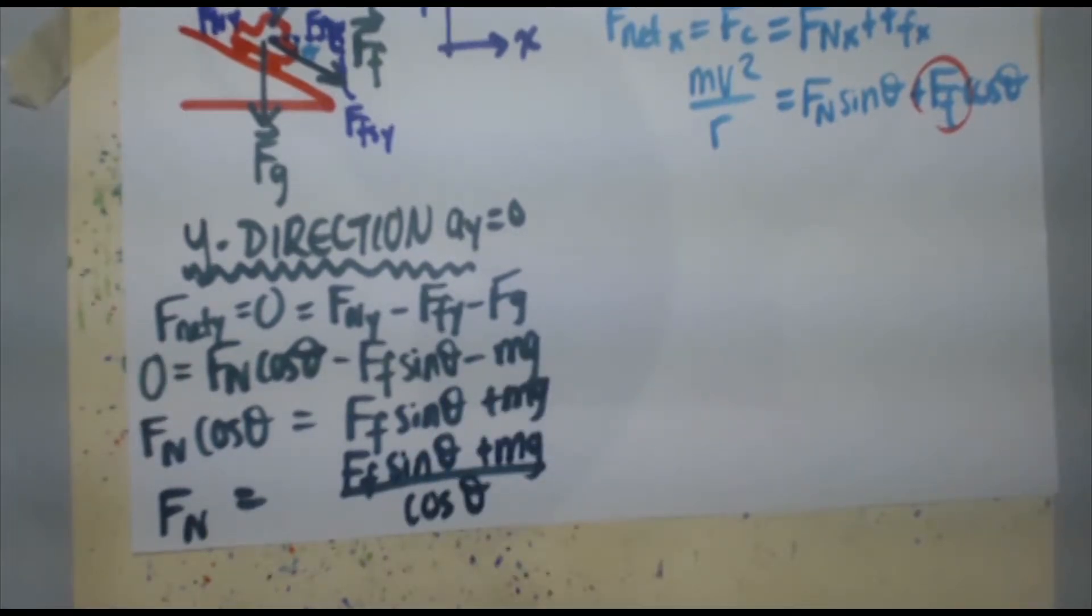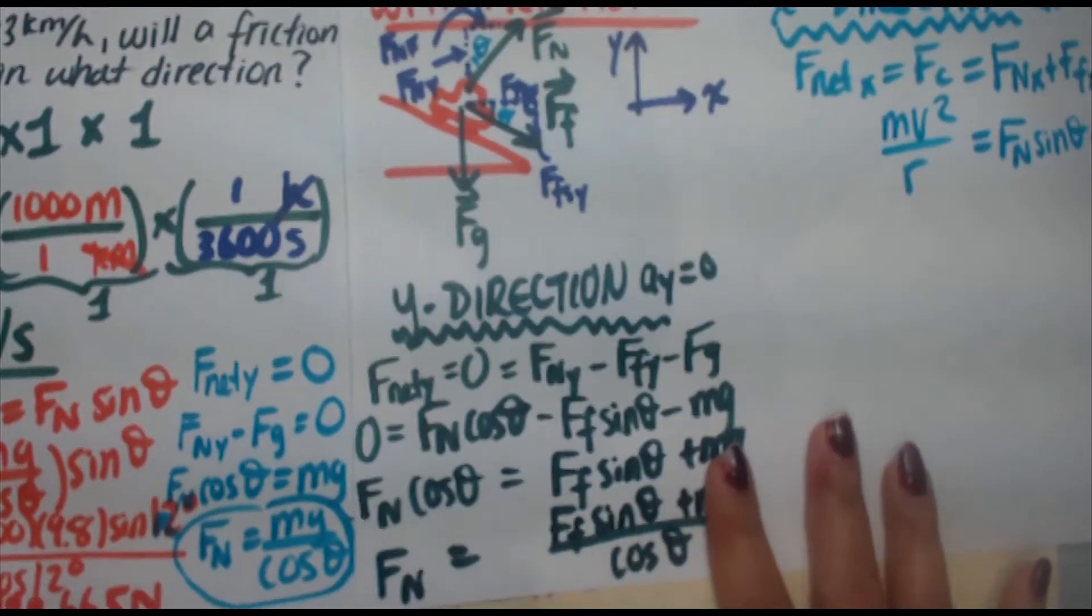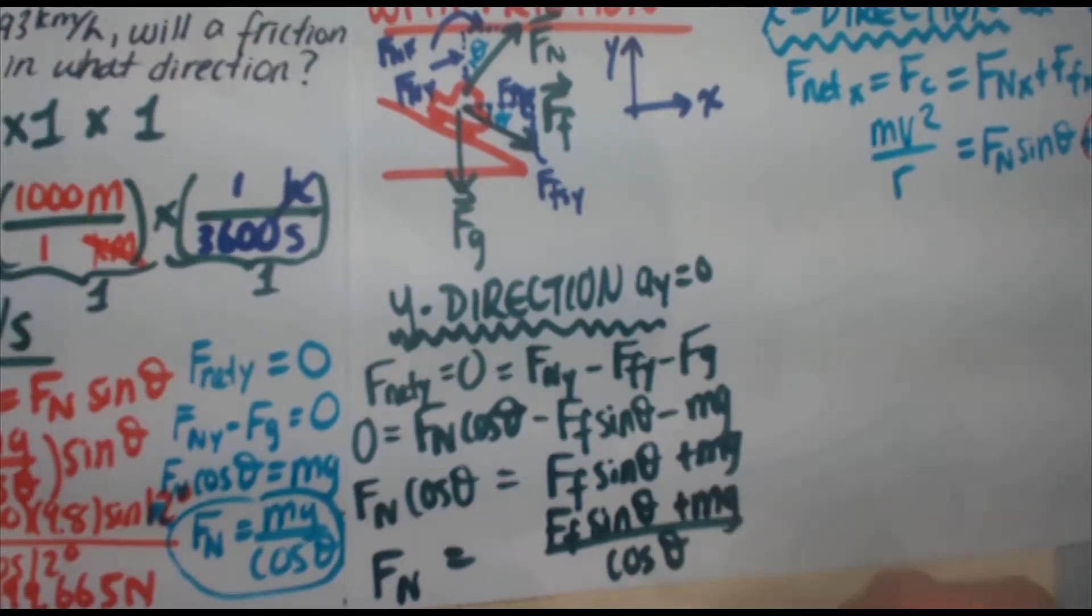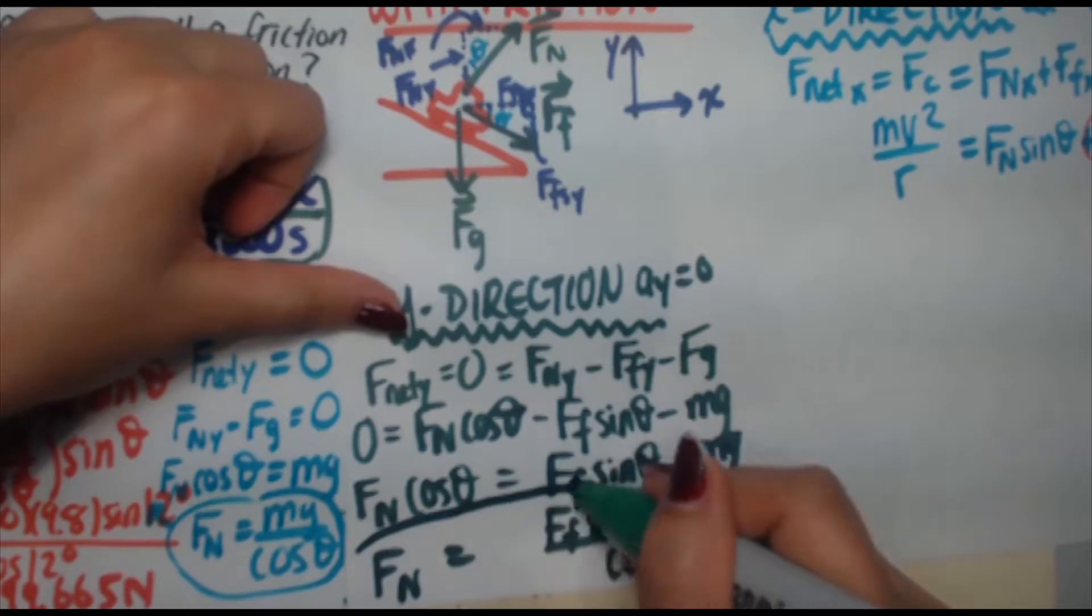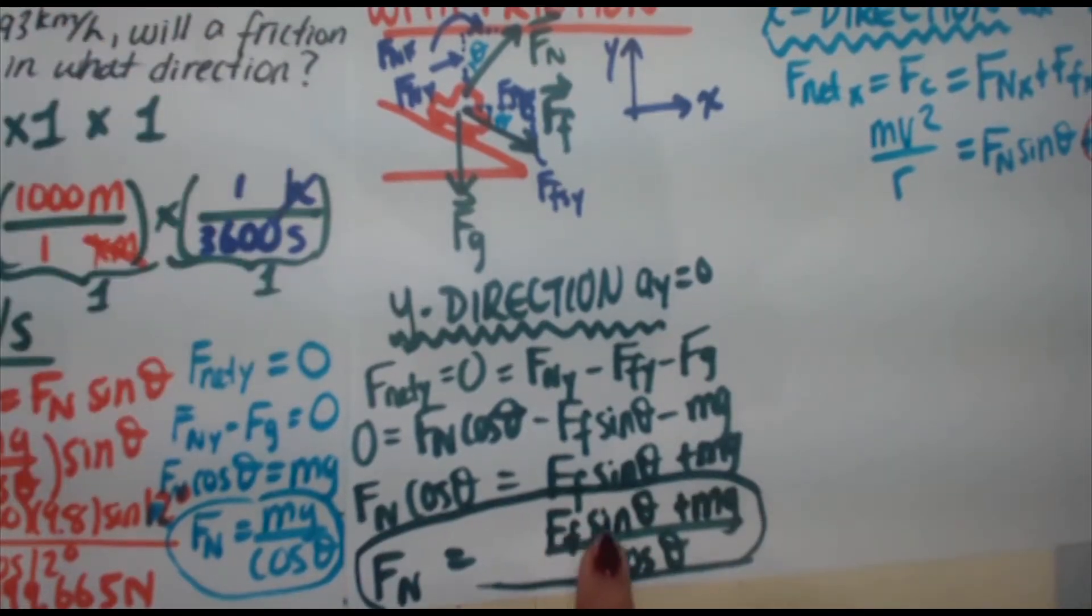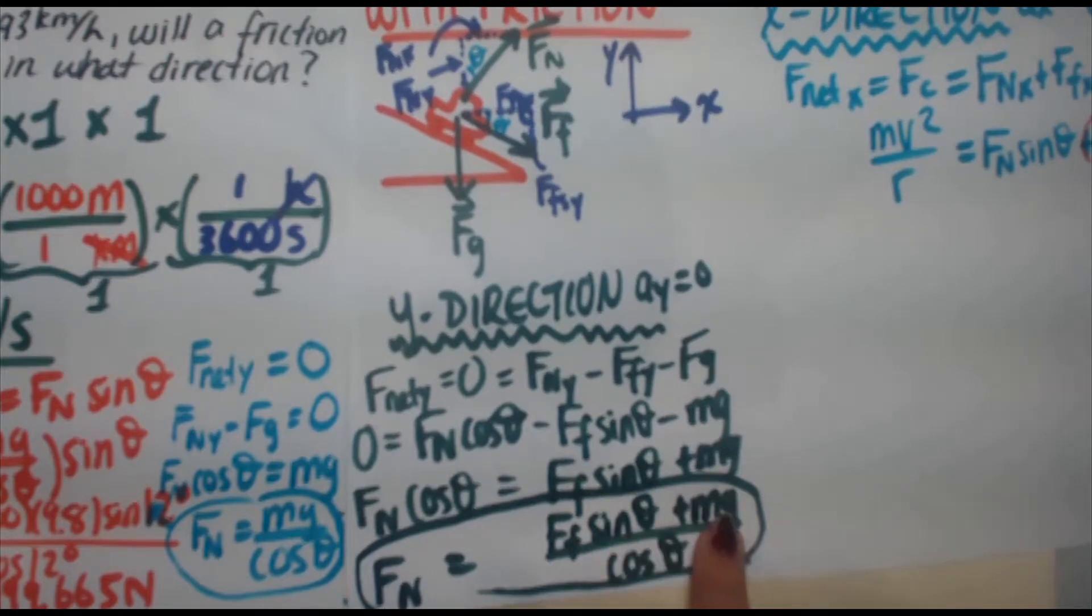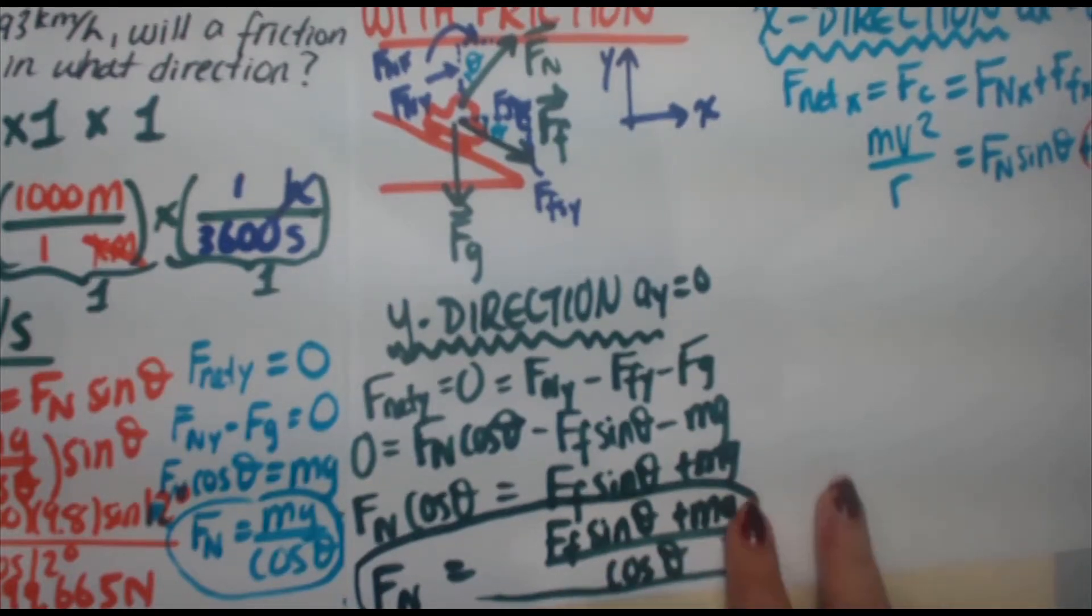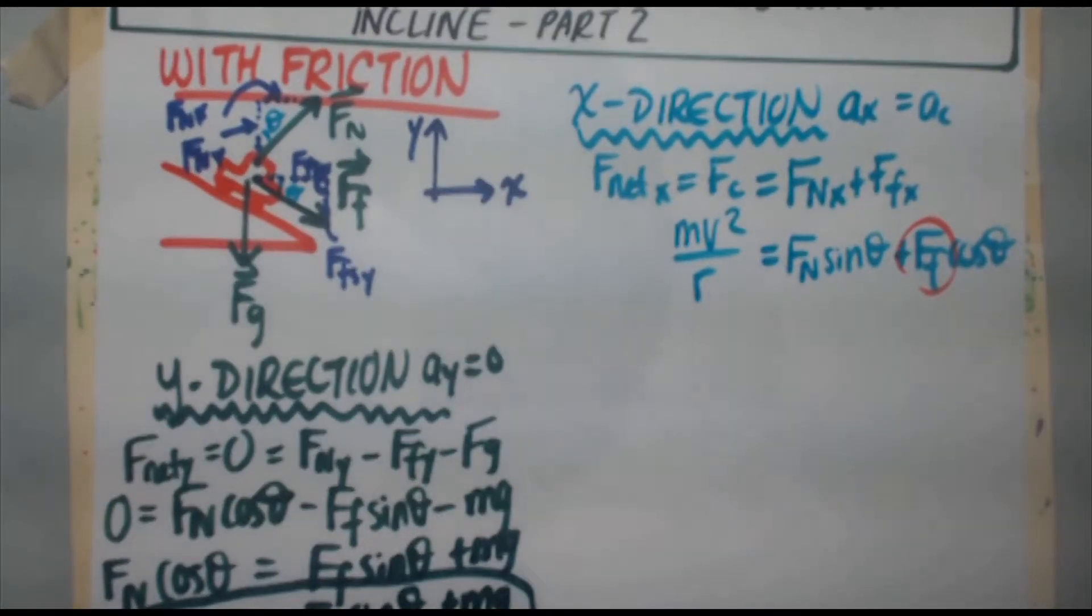If you compare that to what we had before, we found Fn equals mg over cosine theta. We just determined if you include friction too, this is your new normal force. It's force of friction sine theta plus gravity divided by cosine theta. There's a little bit more going on there. That's why you couldn't just subtract the numbers.